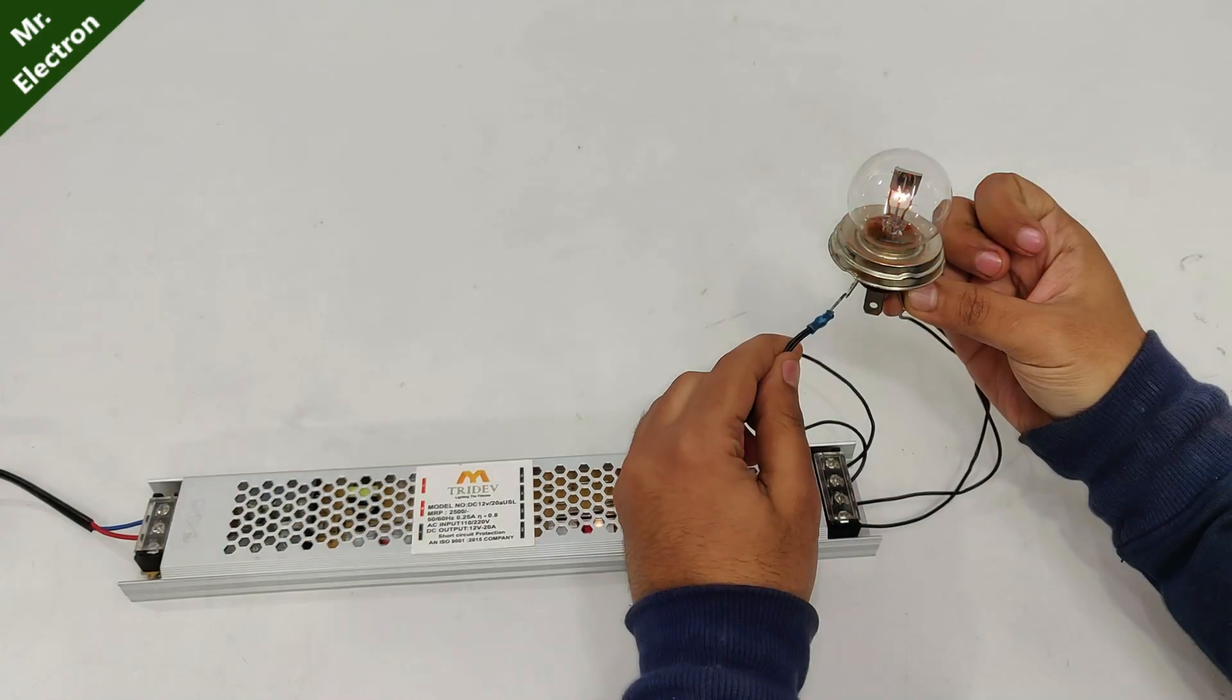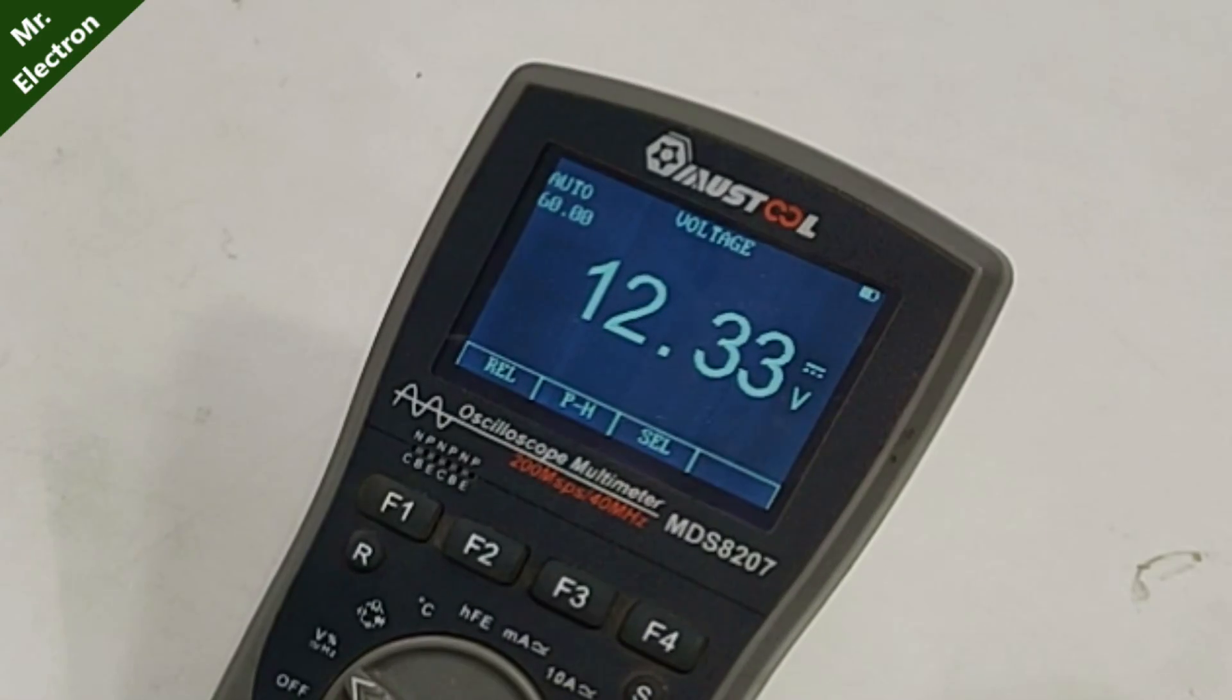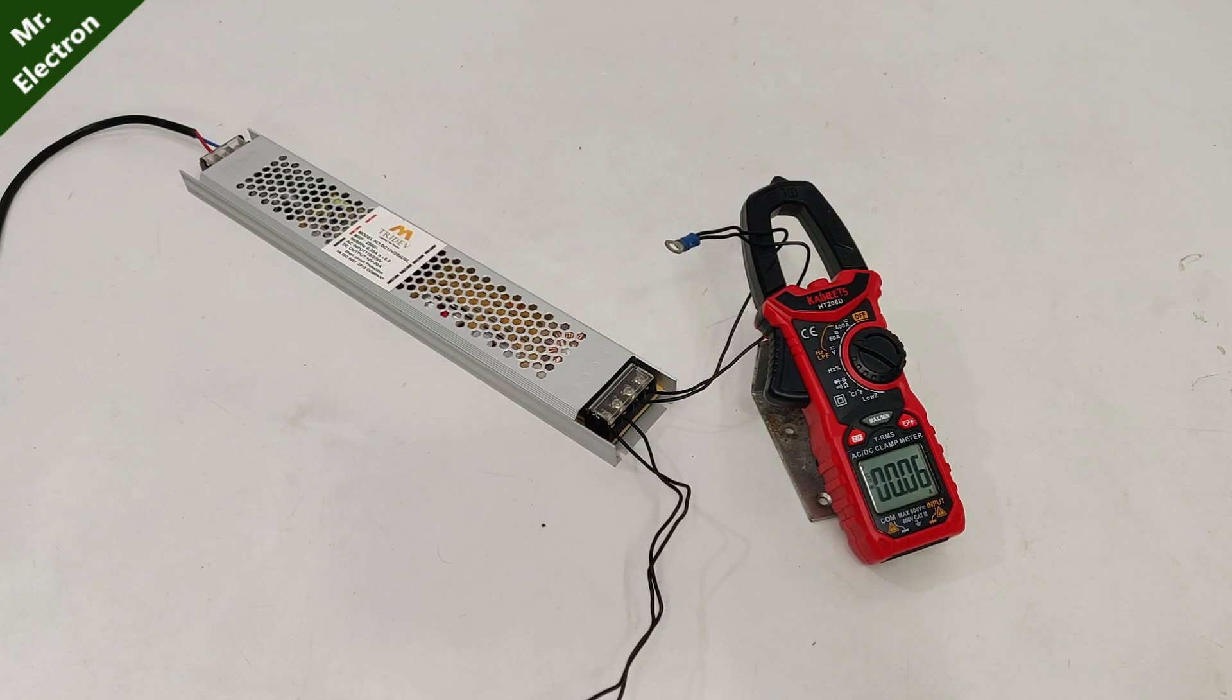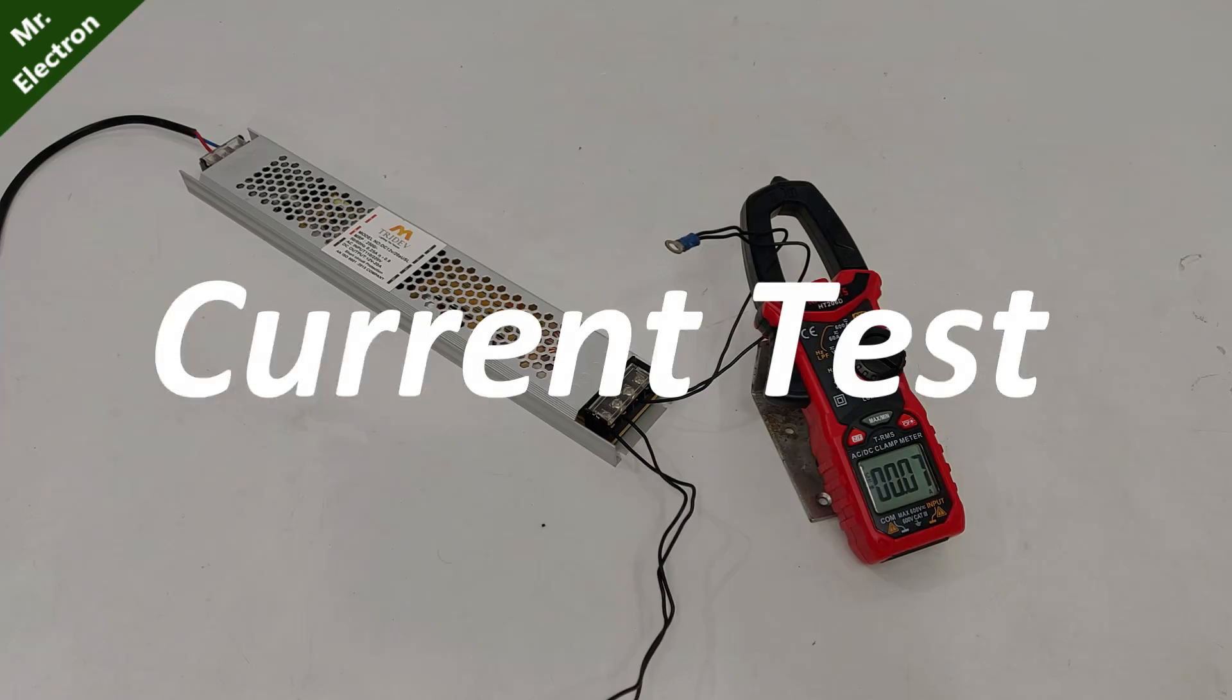The output voltage is 12.33 volts. Moving on to the current testing part, I have this DC motor, high current 12 volts.